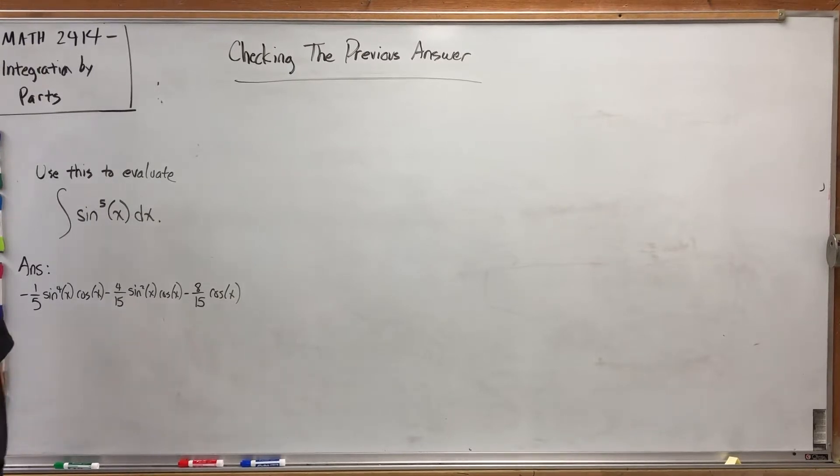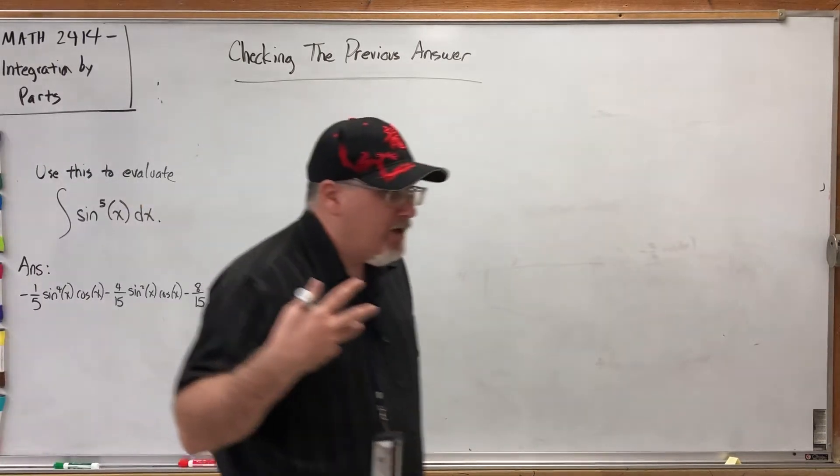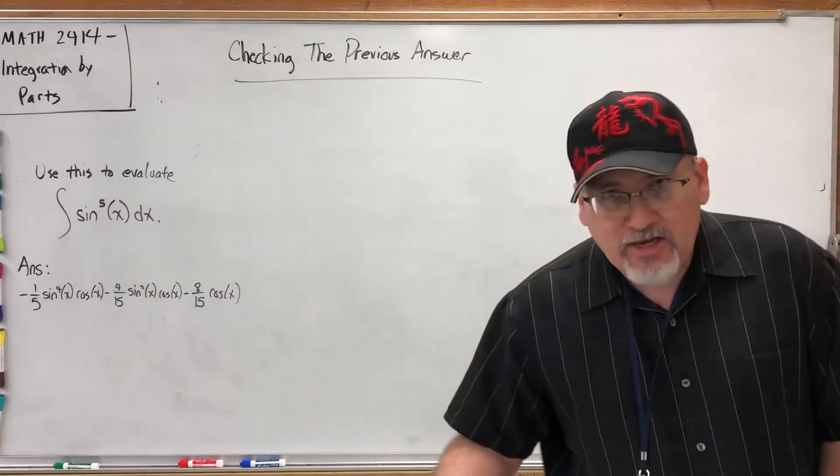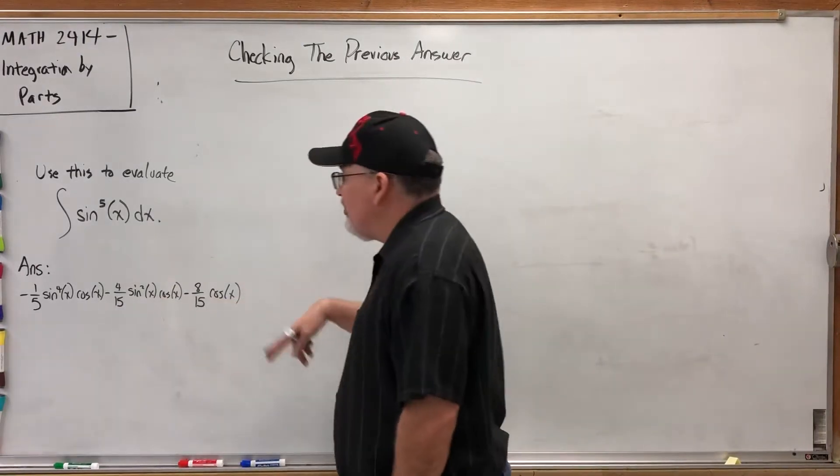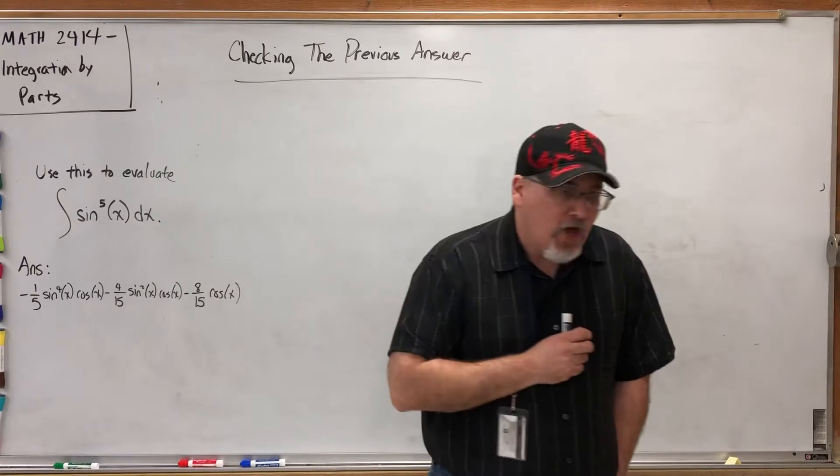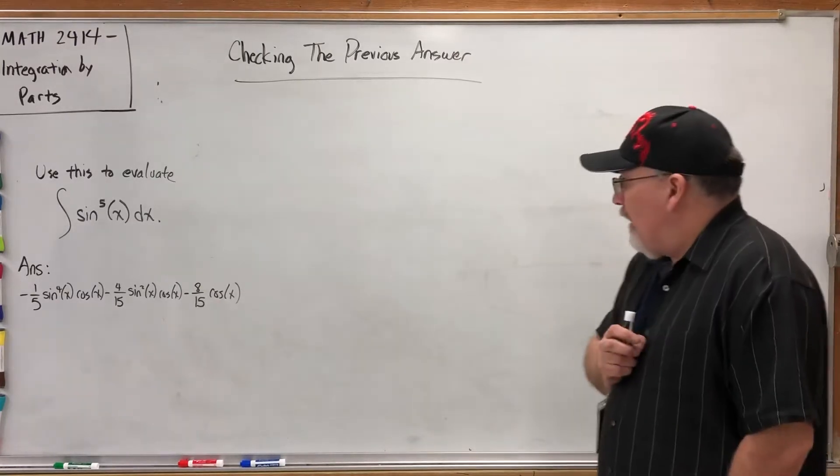One of two things will happen: I'll get there and you'll see inside of my brain—not literally—the things to think when you're trying to reach a predetermined goal. That goal is the derivative of this should collapse down to sine to the fifth.